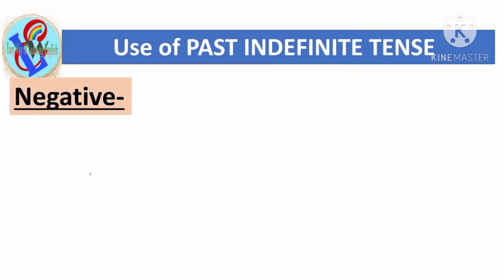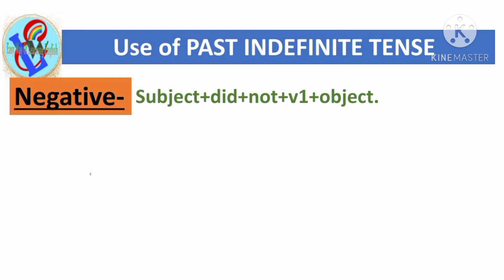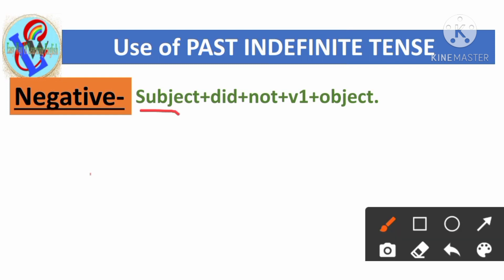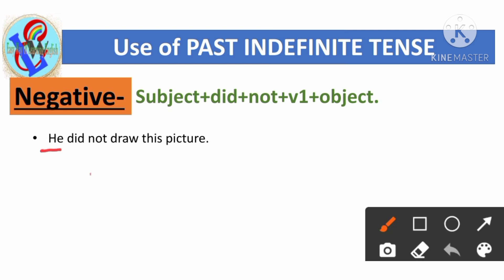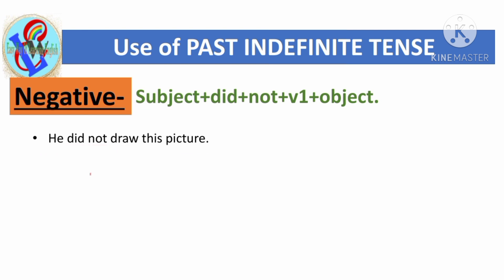Now let's look at the negative structure of past indefinite tense. The structure is: Subject + did + not + first form of verb + object. First sentence: 'He did not draw this picture.' 'He' is the subject, and because it's a negative sentence 'did not' is used, followed by the first form of the verb 'draw', and 'this picture' is the object.